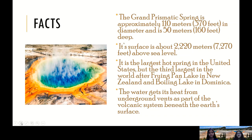The Grand Prismatic Spring is approximately 110 meters, which is 370 feet, in diameter and is 50 meters, which is 160 feet, deep. Its surface is about 2,220 meters, which is 7,270 feet, above sea level. It is the largest hot spring in the United States and the third largest in the world, after Frying Pan Lake in New Zealand and Boiling Lake in Dominica.